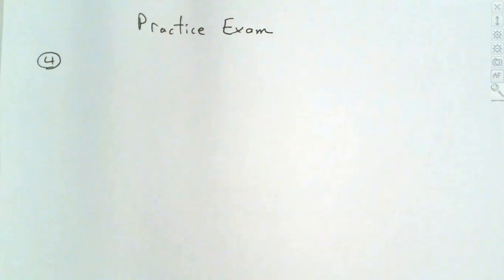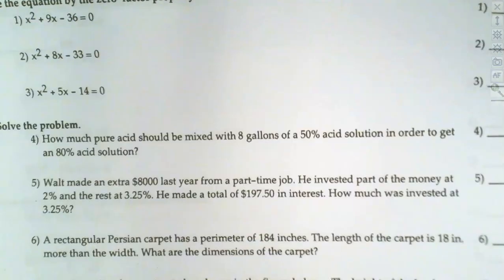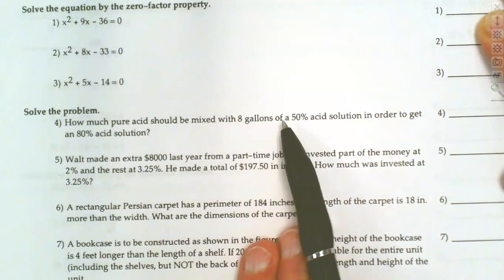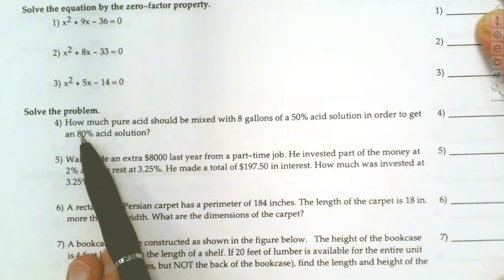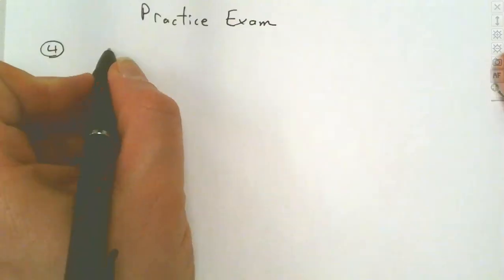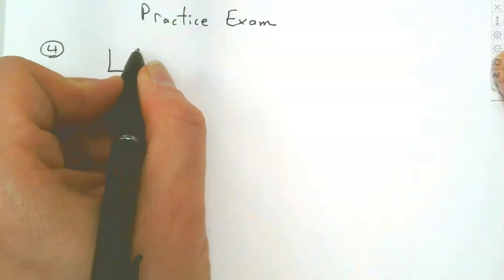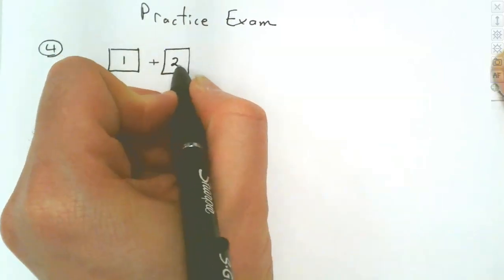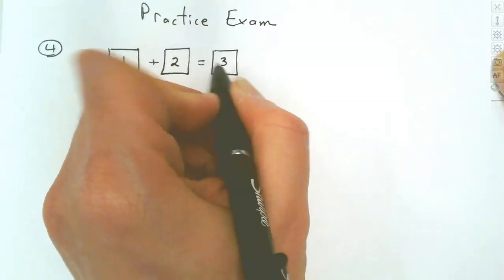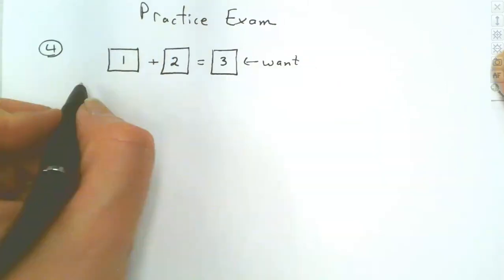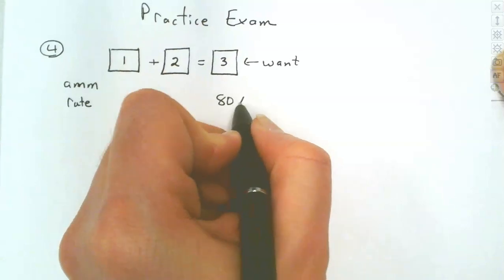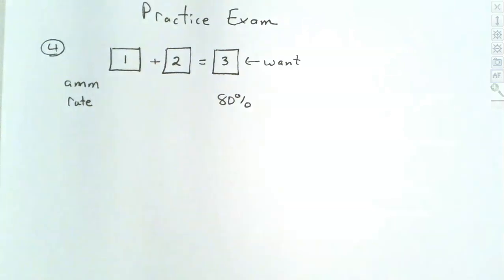Let's read it first and then try to determine where all the pieces go. How much pure acid should be mixed with eight gallons of a 50% solution in order to get an 80% solution? Box one and two are not that important as to which one goes where, but box three is what we want at the end. We want to end up with 80%, so 80% is going to go in box three. Always look and see what you want to end up with — that goes in box three.